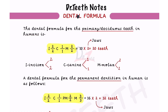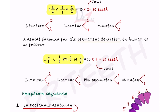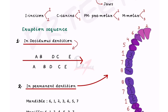The dental formula is different for different animals, like rabbits — these things are asked in examinations, so keep that in mind. For the permanent dentition, the formula is: incisors 2/2, canine 1/1, premolars 2/2, molars 3/3. Total 16 teeth per jaw, multiplied by two jaws, giving 32 teeth.